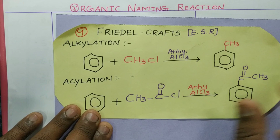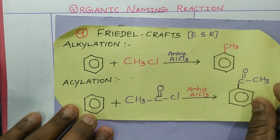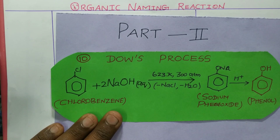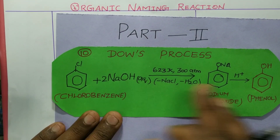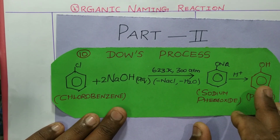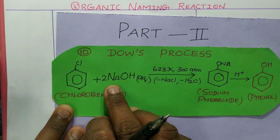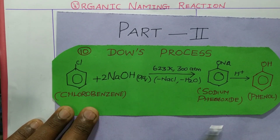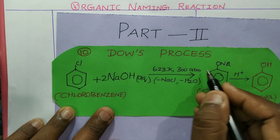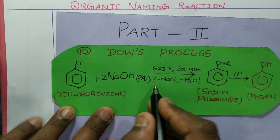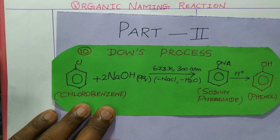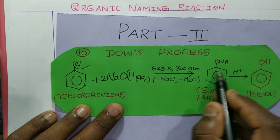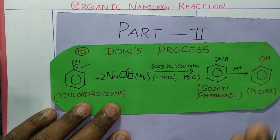Next is the Dow's process. Here, chlorobenzene is converted to phenol. Chlorobenzene reacts with aqueous sodium hydroxide at 623 K and 300 atmospheric pressure, with elimination of NaCl and H₂O, giving sodium phenoxide as the product. On acidification, we get phenol as the final product.